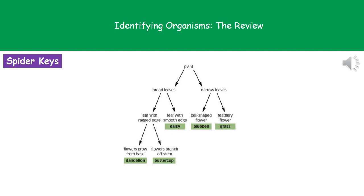If you had a plant in front of you, you'd look at its leaves first based on this key. If it had broad leaves you'd go to the left, then look at the edge of the leaves — if it had a smooth edge, that takes us to the daisy. All you do is look at the picture on the exam paper and follow through each question, following where the arrow points until you reach the end point, then write that name into the answer space.